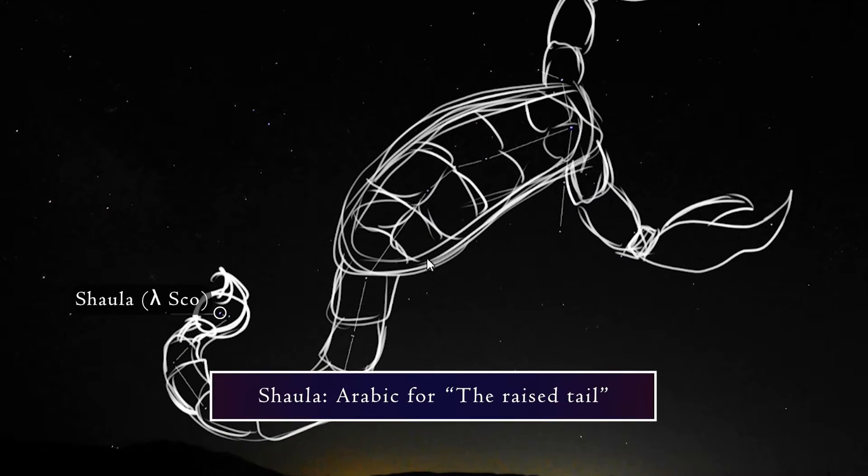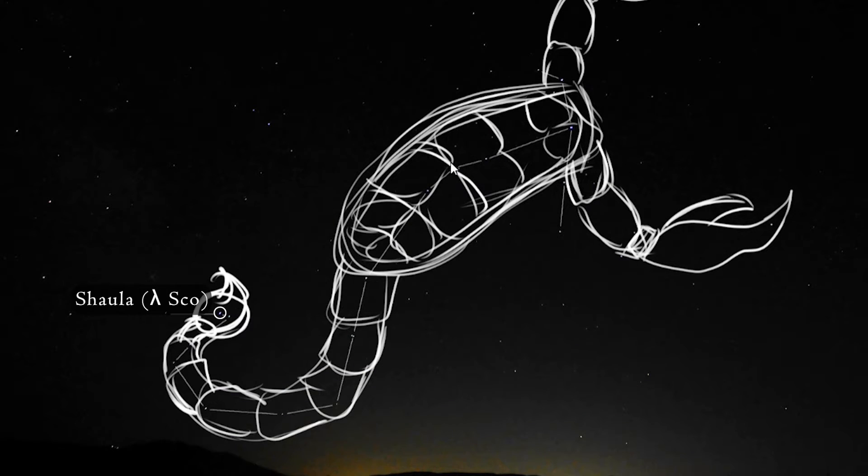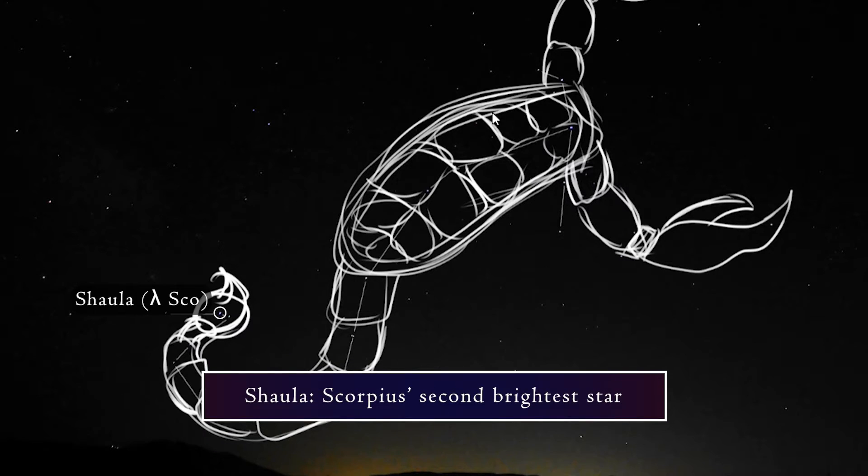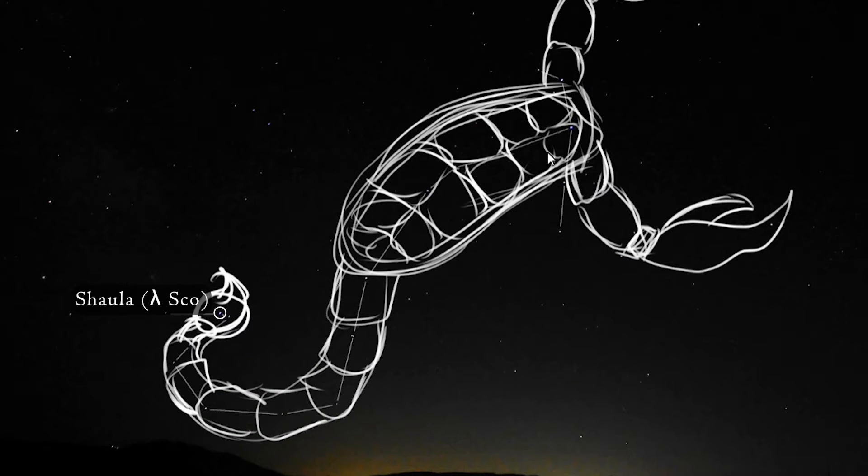Shaula is Arabic for the raised tail. Together, Lesath and Shaula are often referred to as the cat's eyes. Shaula is 570 light years away, and it is Scorpius' second brightest star, with a visual magnitude of about 1.6. Although it looks like one star, it is actually a triple star system. So that means there's just three of them locked in orbit with each other.